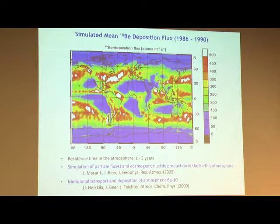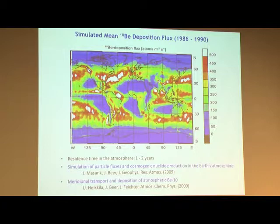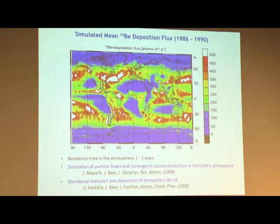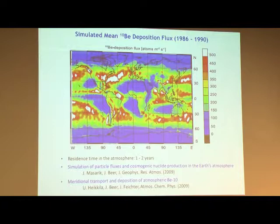The problem with these isotopes is that they are not gas isotopes. They are produced in the atmosphere but quickly attach to aerosols and come down with rain. For example, the beryllium-10 deposition flux over the surface of the earth varies a lot. The cosmic ray flux is uneven, concentrated near the two poles, and deposition is also affected by climate and weather. Using climate models, one can simulate the deposition flux, but it varies by as much as a factor of 10.